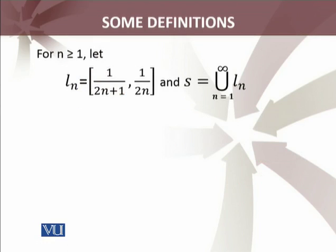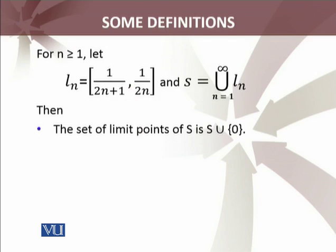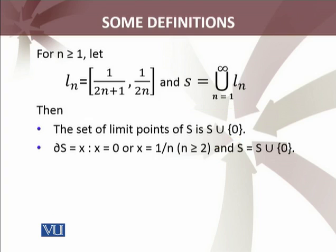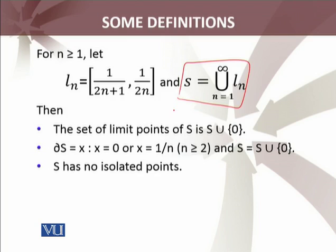Let us discuss a more mathematical example. For N ≥ 1, we define intervals Lₙ, and S is the union of all these intervals. For N = 1, 2, 3, and so on, these are sub-closed intervals. The set of limit points of S is S union {0}. The boundary points are X = 0 or X = 1/N whenever N ≥ 2. The closure of S equals S union its boundary points (X = 0 and 1/N for N ≥ 2). S has no isolated point.